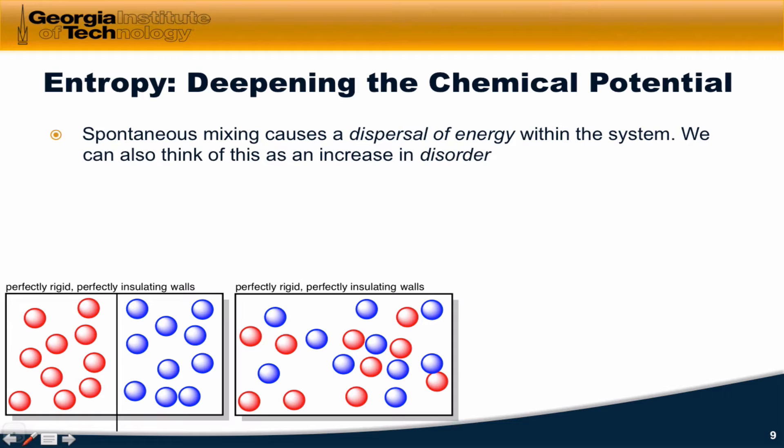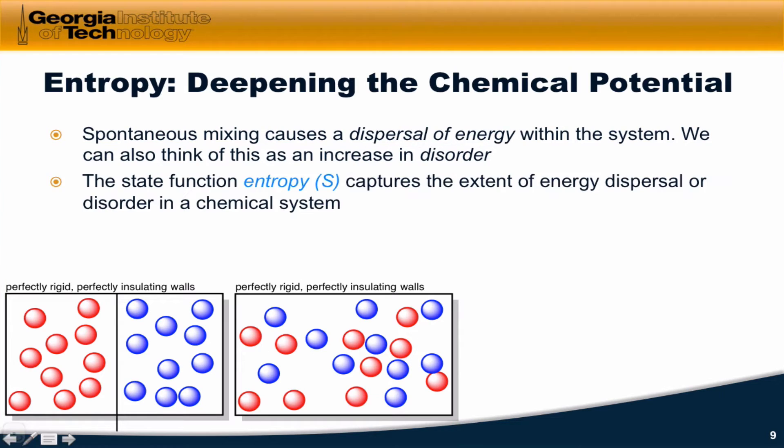What we've already seen is that spontaneous mixing of these red and blue gases within this isolated system causes a dispersal of energy. More specifically, the kinetic energy of all of these particles bouncing around within the container moves from concentrated within each of the two boxes to dispersed over the entire container. The state function entropy, or S, captures the extent of this energy dispersal or disorder for a chemical system.